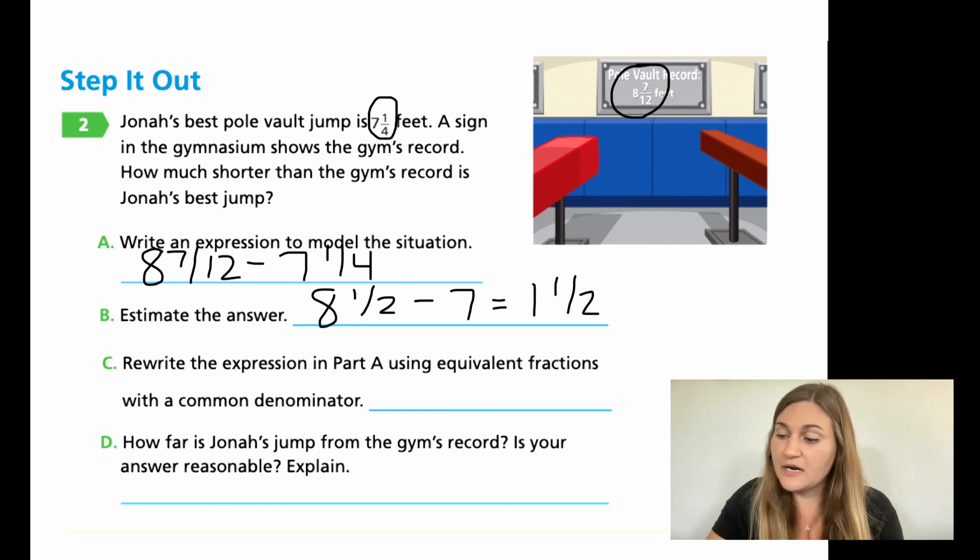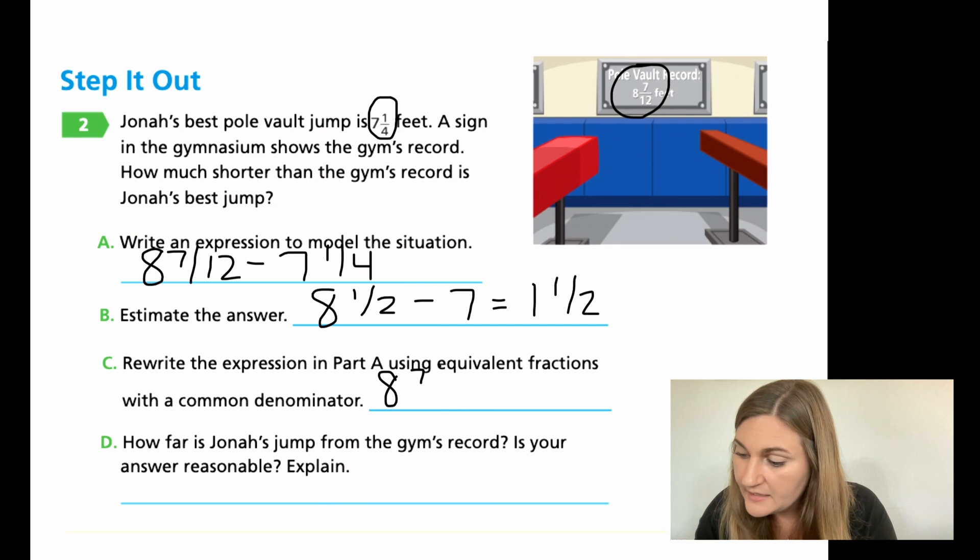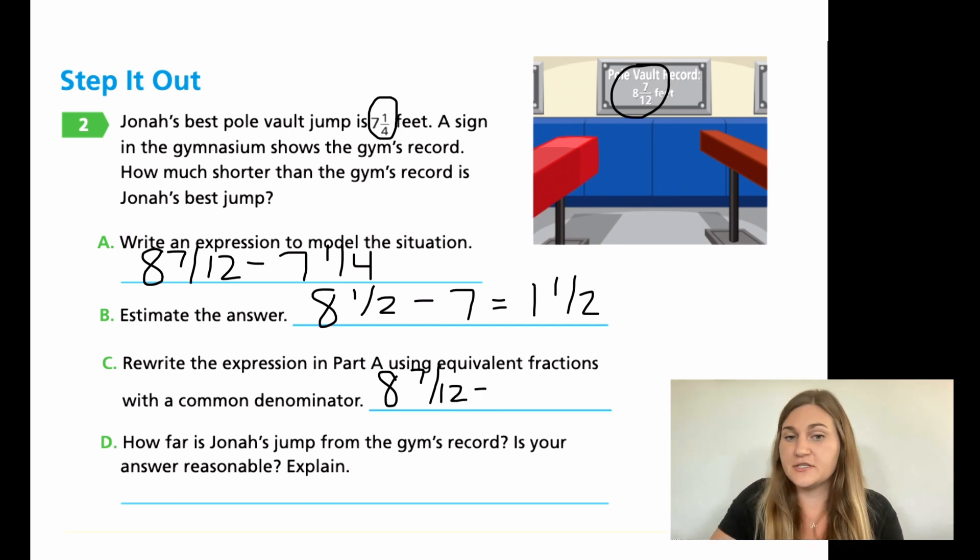So for C, I'm going to rewrite the expression in A with those equivalent fractions using a common denominator. From A, I see my denominators are 12 and 4. I need to make those common denominators by multiplying them to be the same number. And already I realize I can multiply 4 to be 12, which means I don't have to change the first fraction at all. I'm going to take my 8 and 7/12, and then I'm going to subtract it, and I do have to change the second one. So I am going to have that 7, and my denominator is going to be 12. So I'm going from 4 to 12, which means I'm multiplying by 3, and my numerator is already 1, which means 1 times 3 is going to be 3. That's my expression.